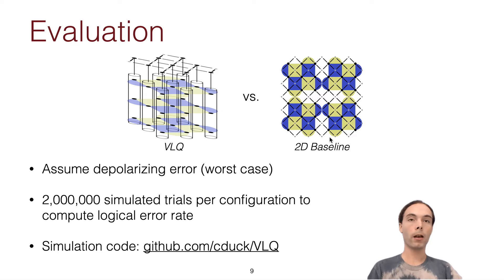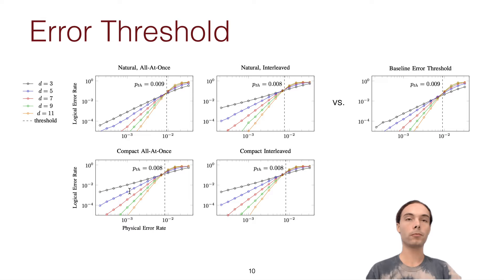Okay, so finally, we'll get to evaluation. So while we're comparing our architecture, a couple variants of it that we look at in the paper versus this baseline with 10 times more qubits. So for errors, we assume depolarizing error, which is a good approximation of real errors. It's actually a worst case, but we do not assume that there's correlated errors. We assume all errors are independent. And we perform 2 million simulated trials per data point in order to compute the low logical errors that we achieve. And for more details about this, you can check out our GitHub repository with more documentation.